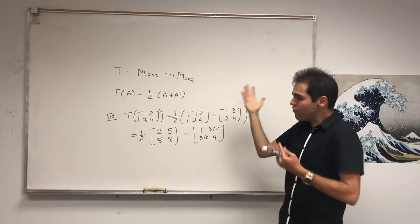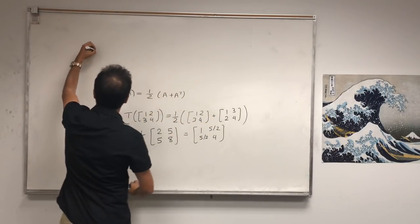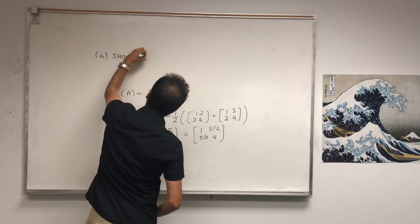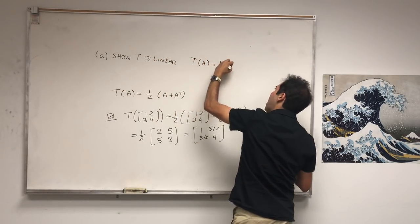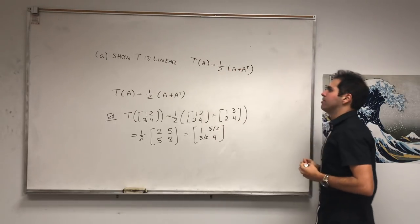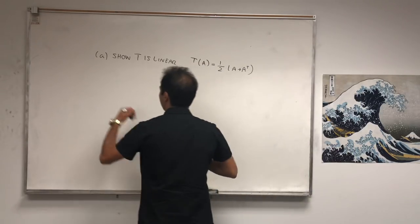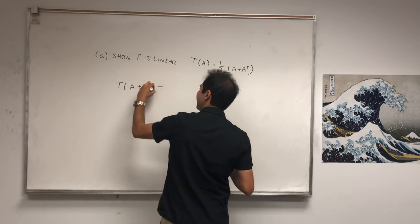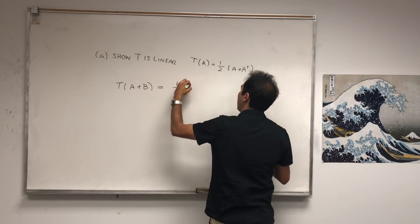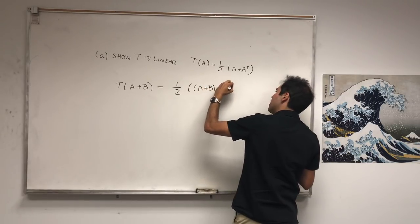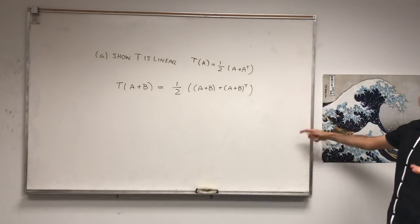What do I want to show? First, as an exercise, let's show that T is linear. How do you show a transformation is linear? Remember T of A is one-half times A plus A transpose. You literally show it's additive and scalar multiplicative. So let's show T of A plus B. Note that the transpose is itself linear.